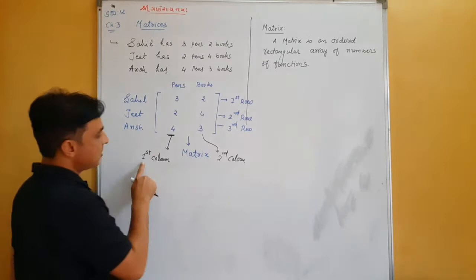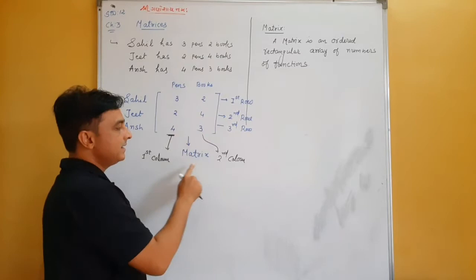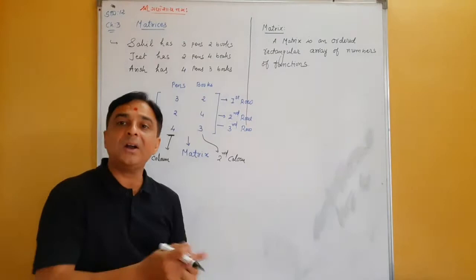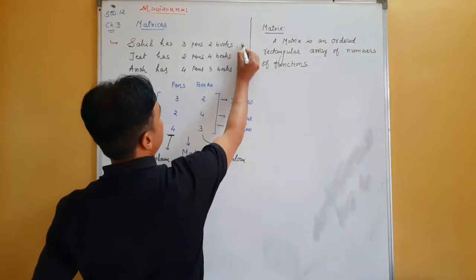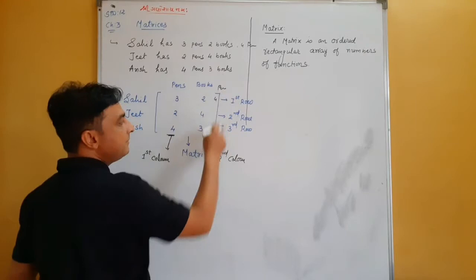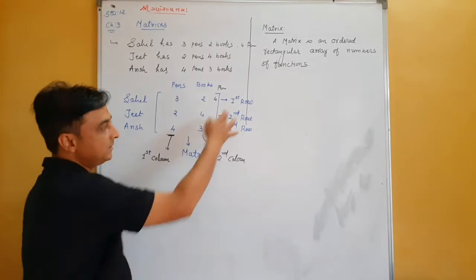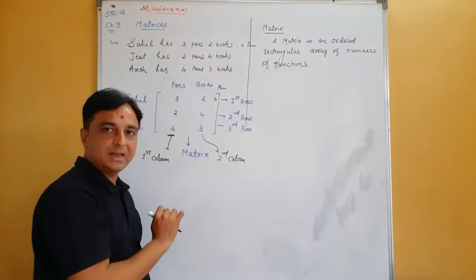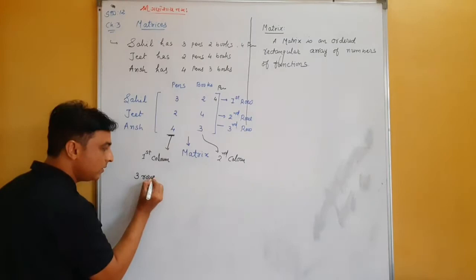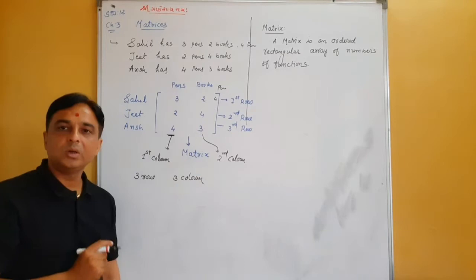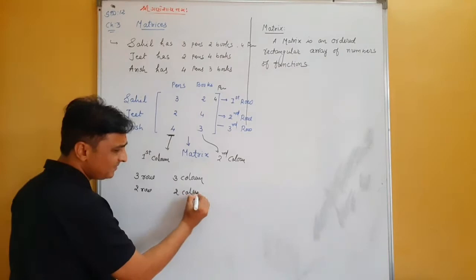The first column is 3, 2, 4 and the second column is 2, 4, 3. Now, if we have a third item — say pencils — it becomes a third column. So this matrix would have 3 rows and 3 columns (3×3). Currently with only pens and books, it is 3 rows and 2 columns.